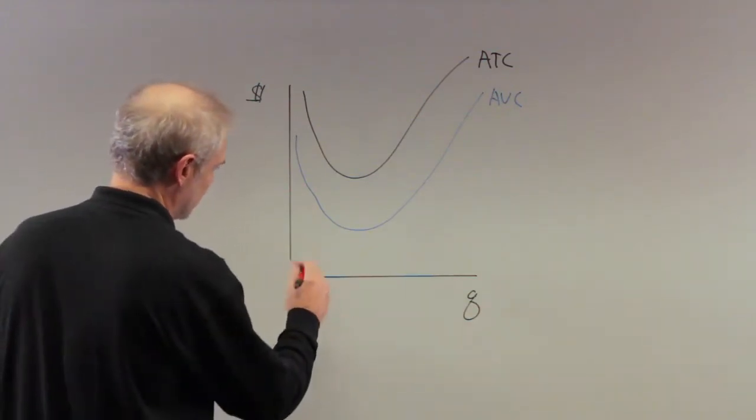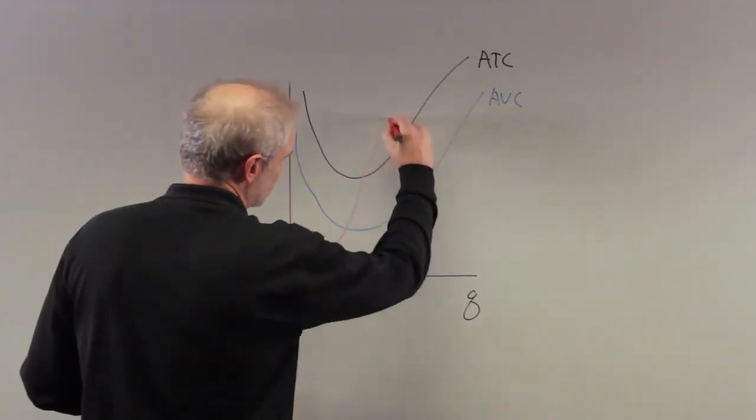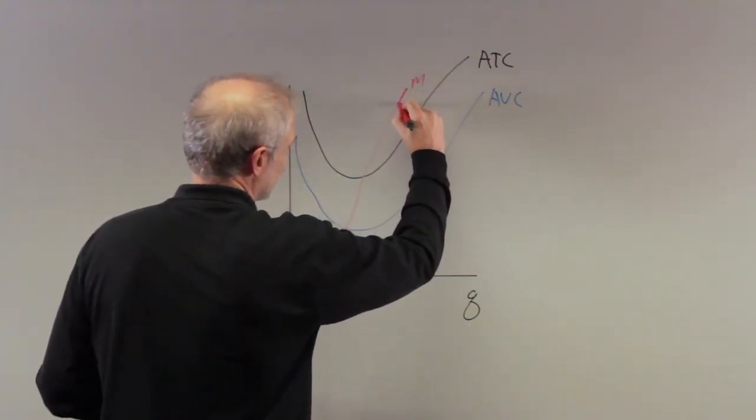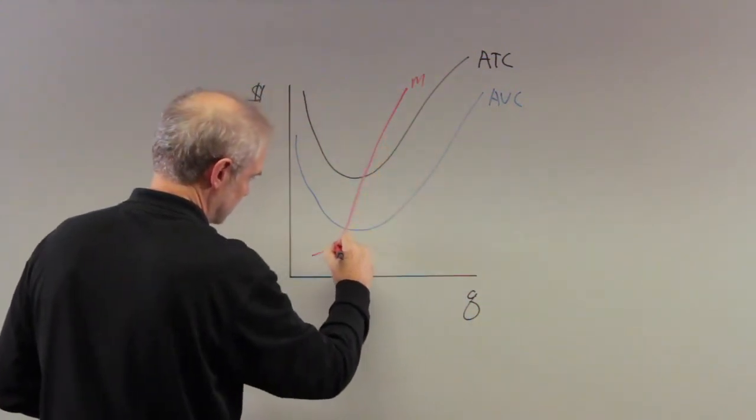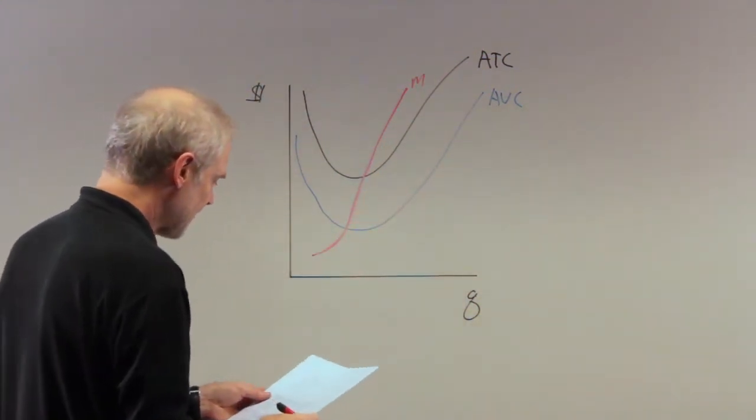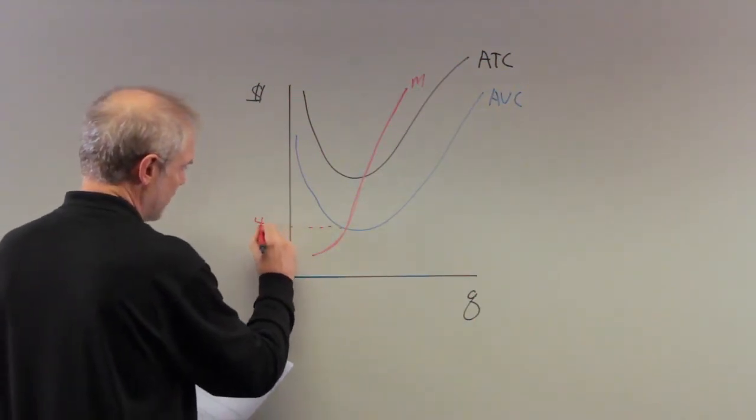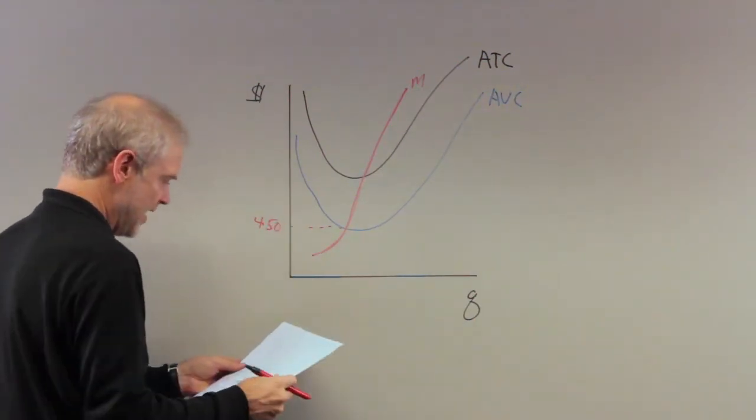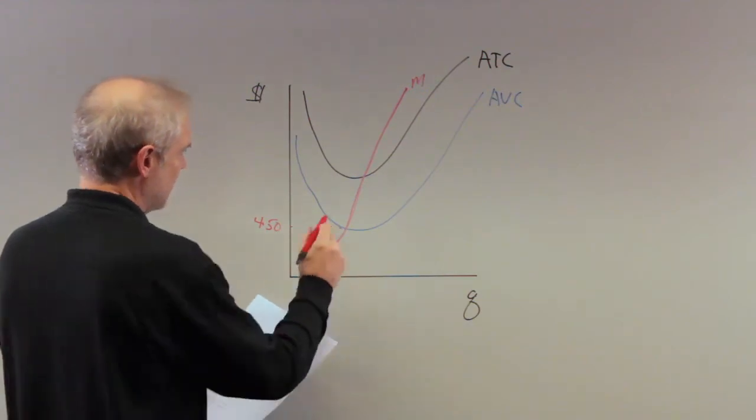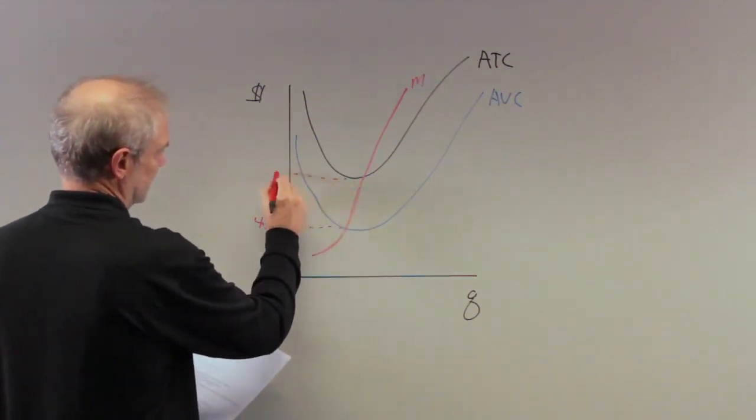Average variable cost curve in blue, and then we have a marginal cost. I'm going to put this in red. And marginal cost, you know, touches the bottoms there. Now we have some quantities actually important to us. We're going to put $4.50 there, and we have a quantity up here which should be about $6.50.